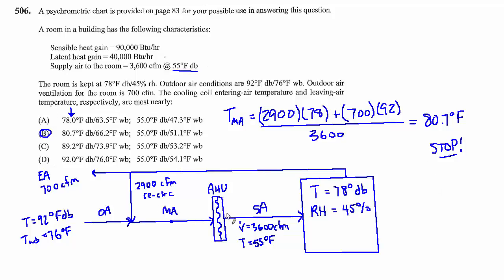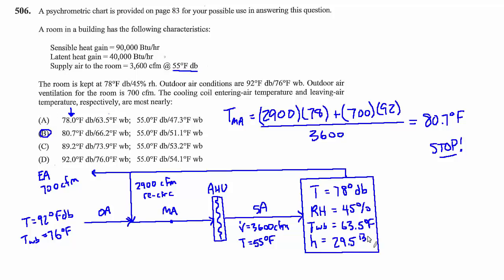For practice, let's also find the wet bulb for the mixed air and for the supply air. Just as we did a mixed air calculation for dry bulb, we can do something similar for wet bulb. The conditions in the room are fully defined, so let's look up a few more values from the psychrometric chart. At 78 degrees dry bulb and 45% relative humidity, the wet bulb temperature is 63.5 degrees Fahrenheit, and the enthalpy inside the room is 29.5 BTU per pound.